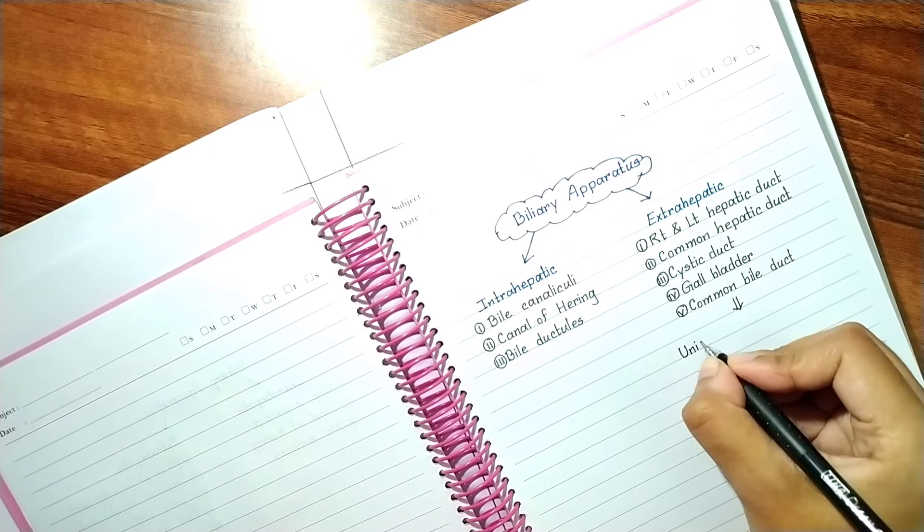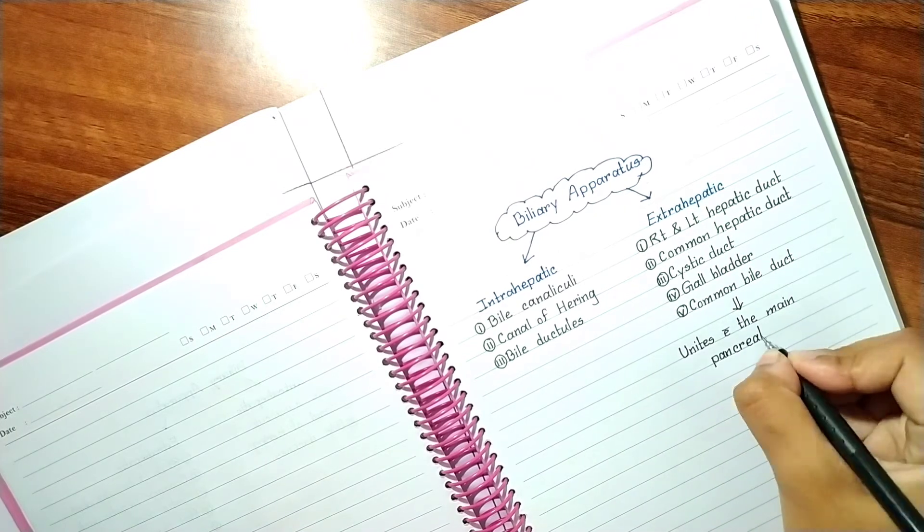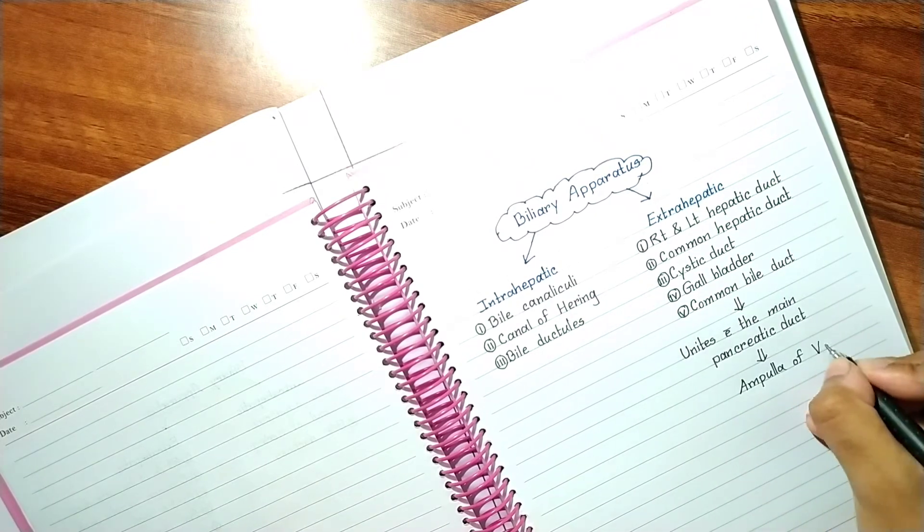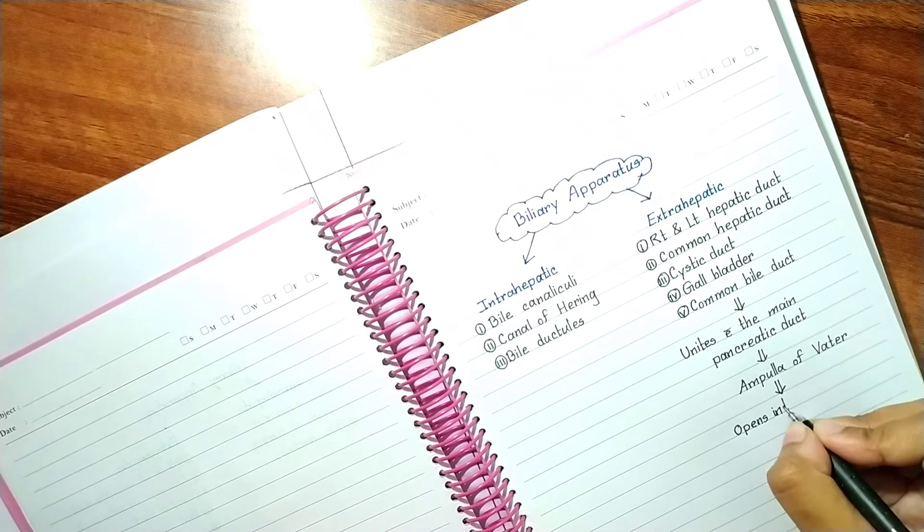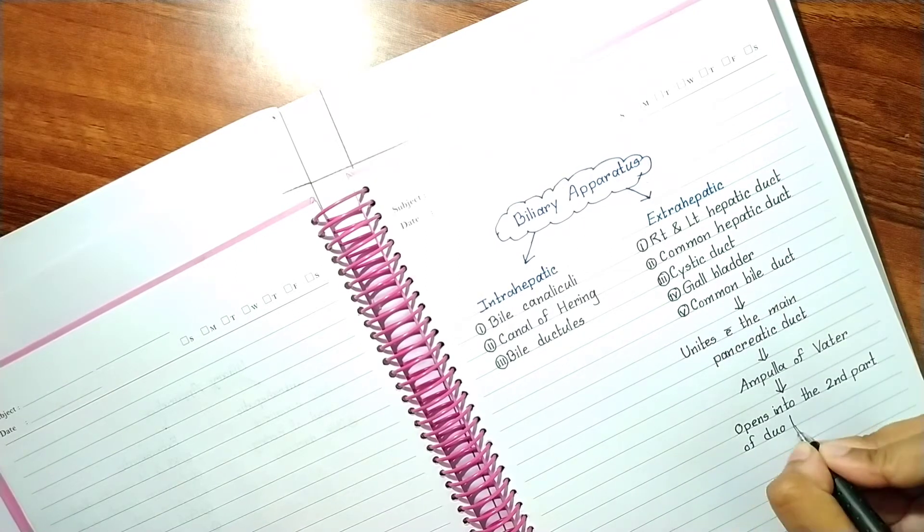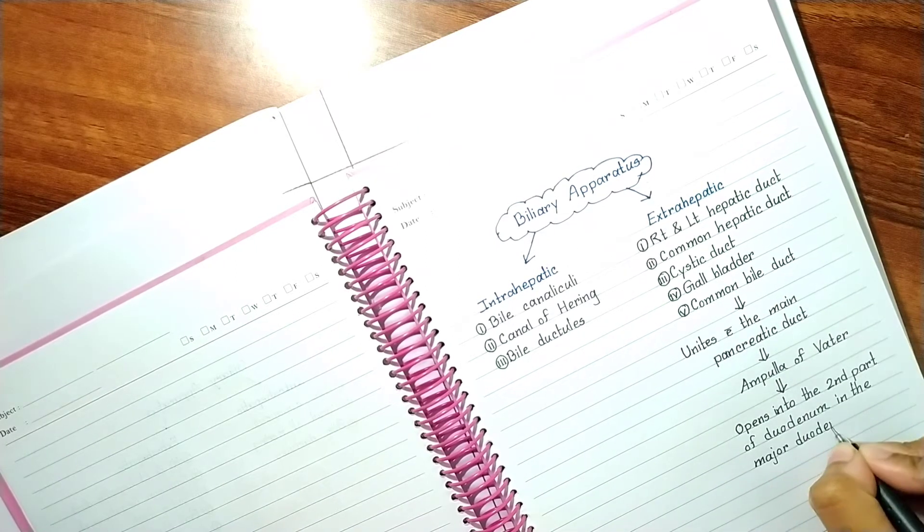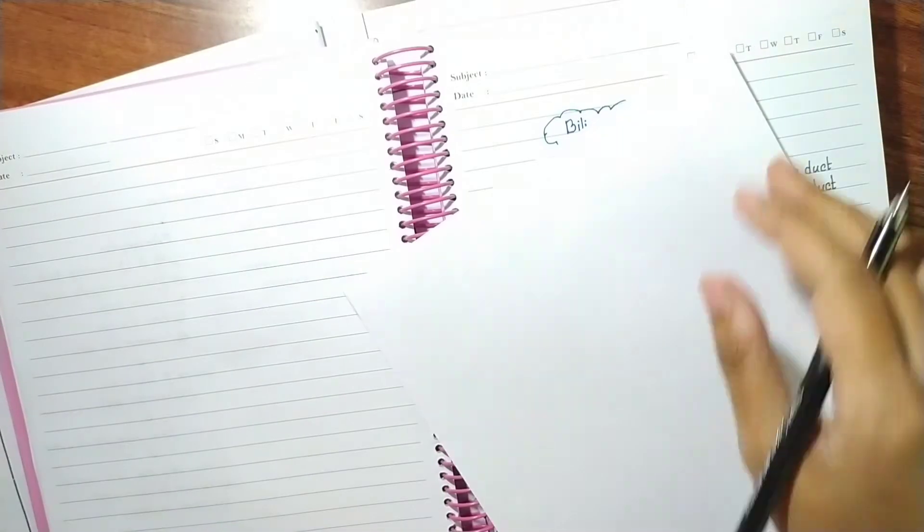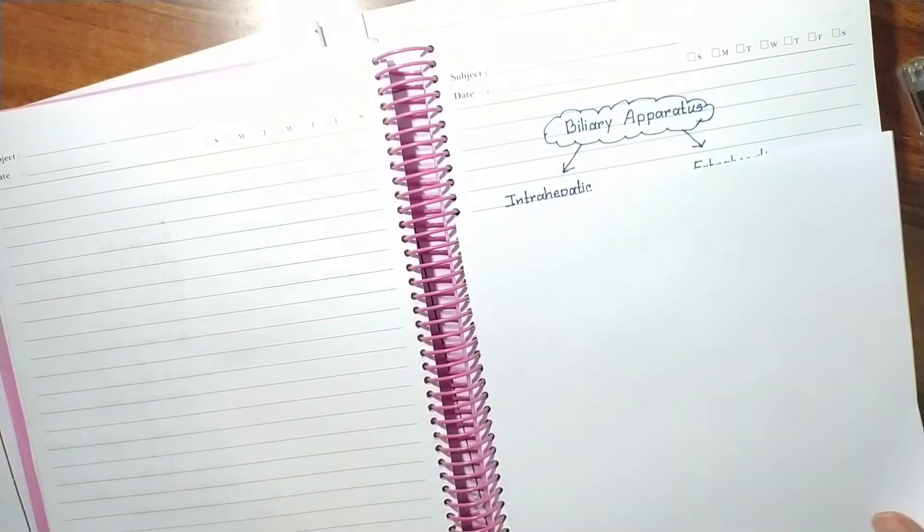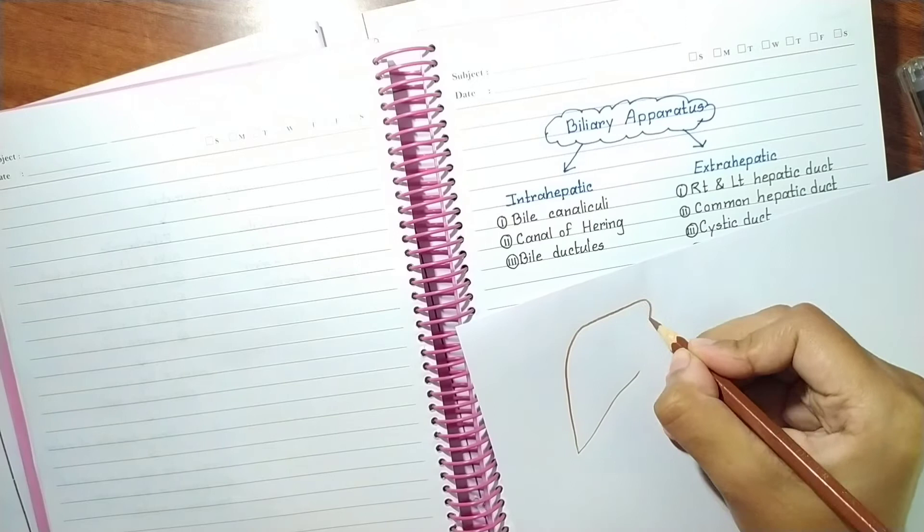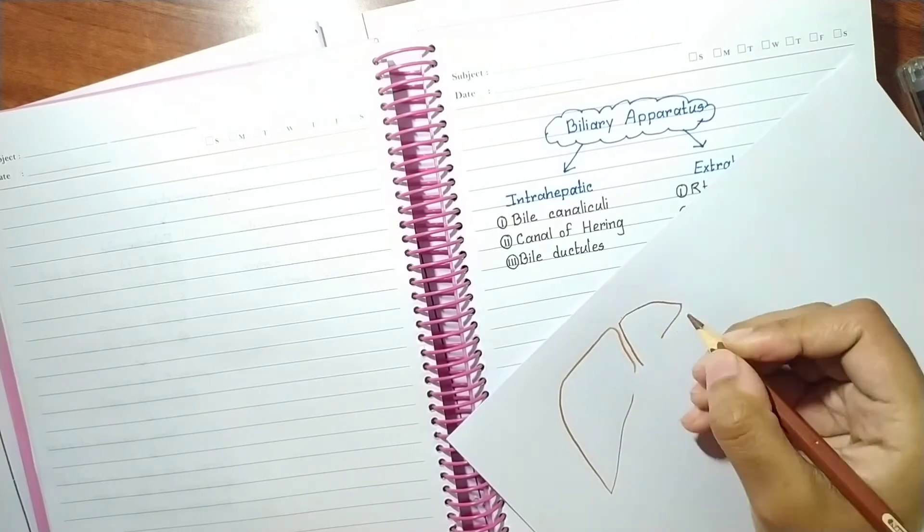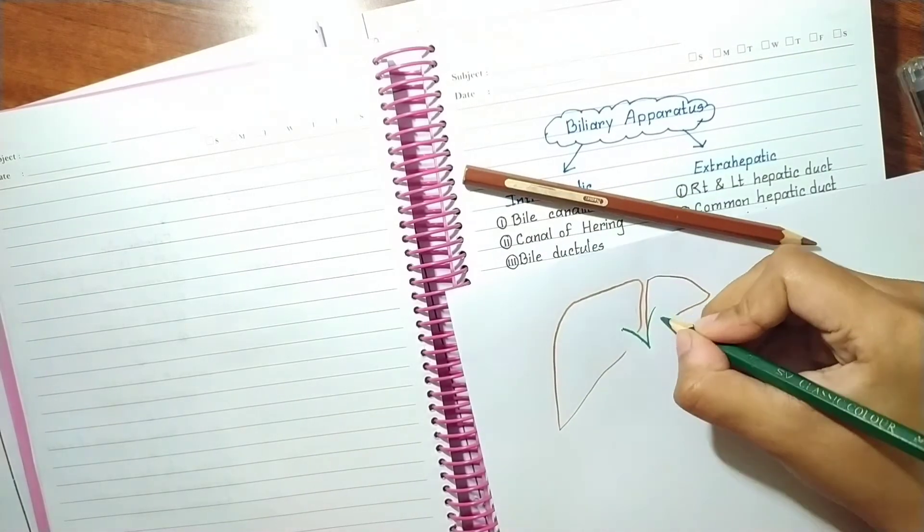The common bile duct unites with the main pancreatic duct to form ampulla of Vater and opens into the second part of duodenum at the major duodenal papilla. Now let's draw a figure of biliary apparatus and pathway of bile.